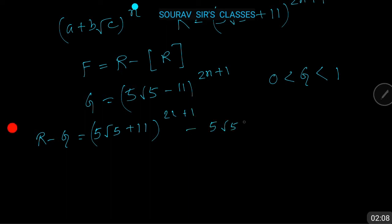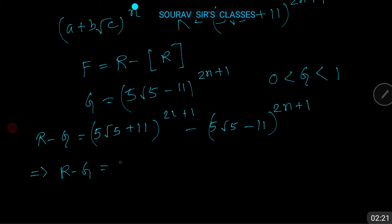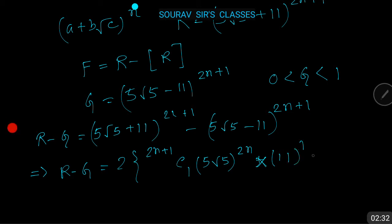That implies R - g equals 2 times [2n+1 C 1 · (5√5)^(2n) · 11 + 2n+1 C 3 · (5√5)^(2n-2) · 11³ + dot dot dot], which is an even natural number.